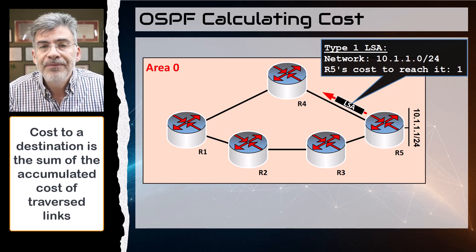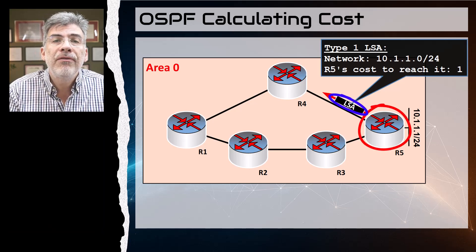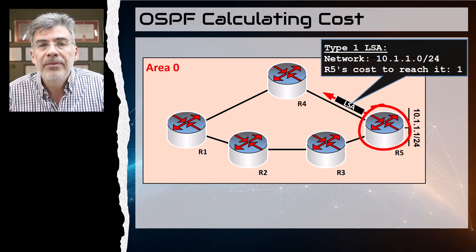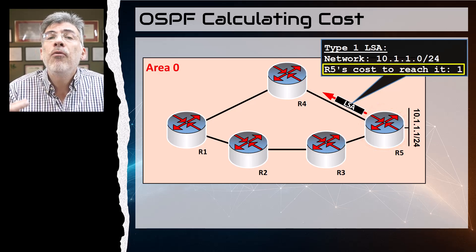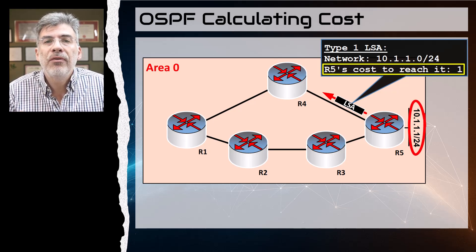For example, when R5 sends a type 1 LSA to R4, it includes its own cost of reaching the network. For R5, it has a cost of one here to reach the 10.1.1.0/24 network.